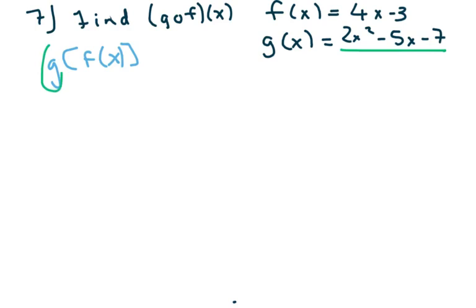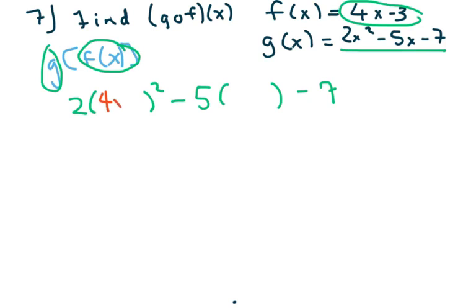So since g is on my outside here, I'm going to write down g. And everywhere there's an x though, I'm just going to put parentheses. Now I'm going to dump in my f(x) because it's on the inside. It's my inner function, and g is my outer function. So I'm going to dump in 4x minus 3.